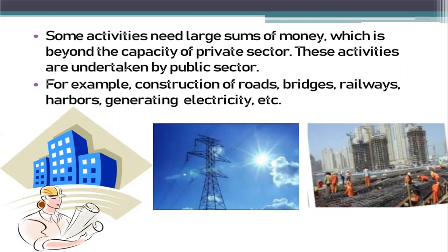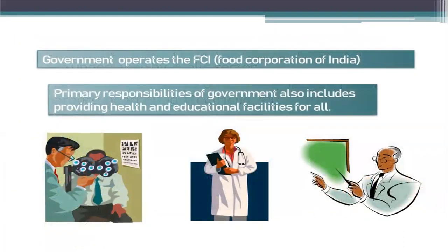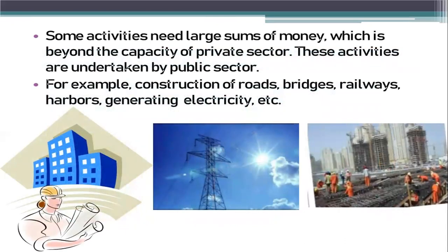There are activities where the private sector may not continue their production unless the government encourages them. For example, selling electricity at the cost of generation would push up the cost of production for many industries, causing many units — especially small scale units — to shut down. Governments step in by producing and supplying electricity at rates these industries can afford.